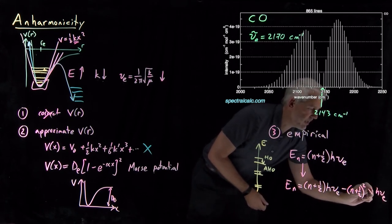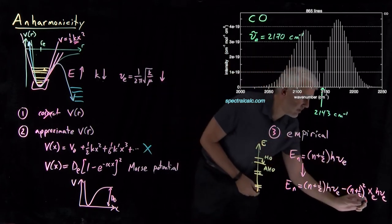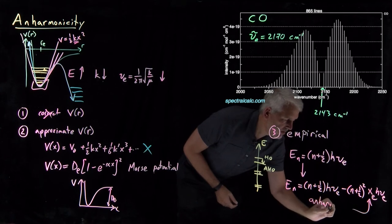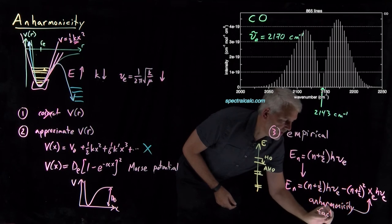Subtract not n plus a half but (n + ½)² times hν multiplied by a correction factor x_e. This correction factor we call the anharmonicity correction or the anharmonicity factor.